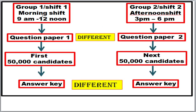Group 1 students will have a separate question paper and Group 2 students will have a separate question paper. Many students think that since it is the same life sciences examination, both shift 1 and shift 2 students will have the same question paper — but that is not possible at all. Each question paper will have a certain percentage of easy questions and hard questions. The general aptitude section is similar, but Part B and Part C are completely different. Shift 1 is written by the first 50,000 candidates and the next 50,000 are allotted to shift 2.